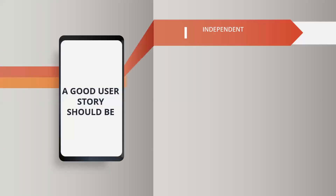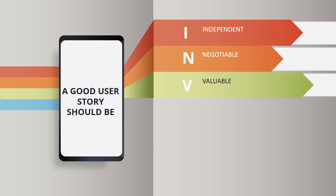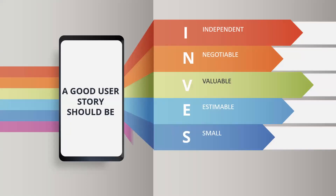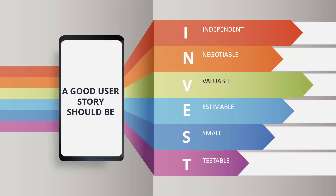Now let's talk about the qualities of a good user story. The acronym is INVEST — I-N-V-E-S-T. A good user story should be Independent, Negotiable, Valuable, Estimable, Small, and Testable. Independent means it should be a standalone story, especially independent from future stories — it shouldn't be dependent on any other story.